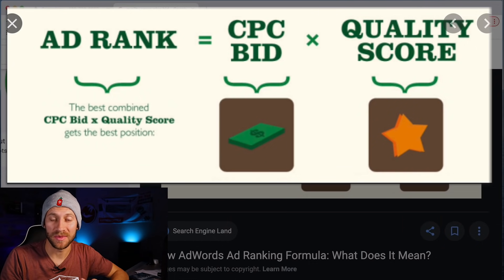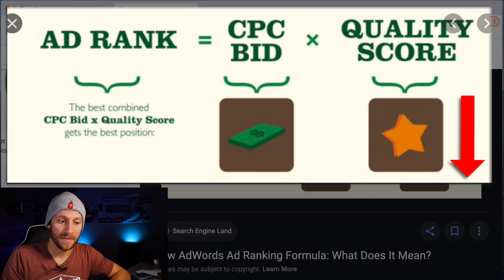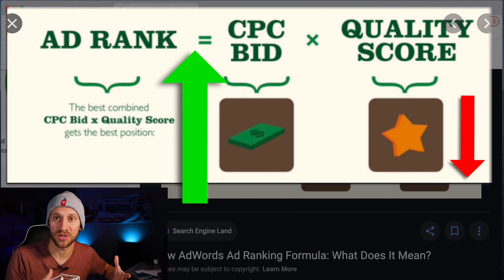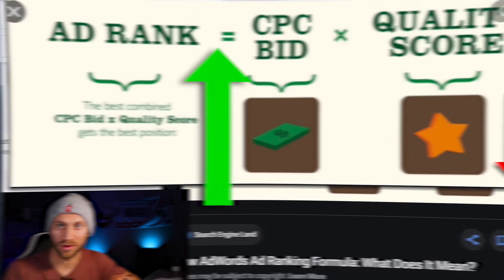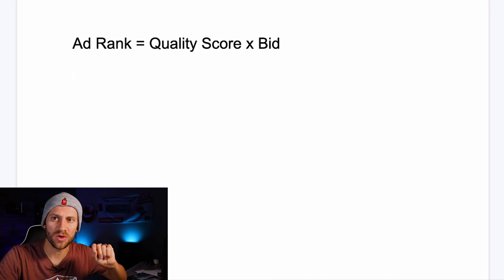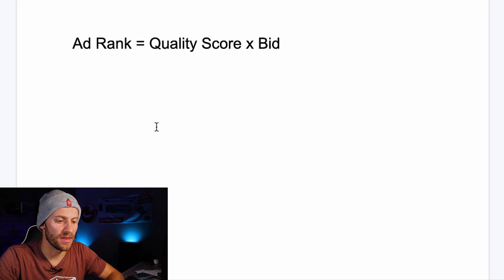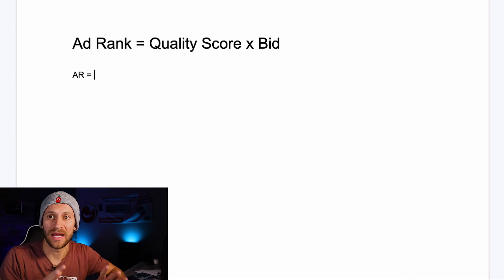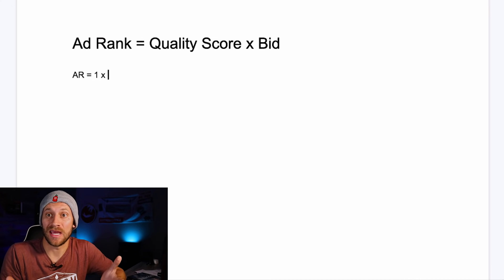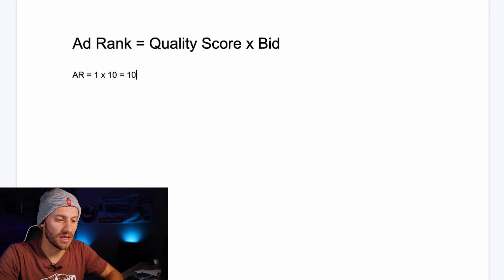If you look at this mathematical algorithm, a really low quality score means if they want to still rank in those top four spots, they're going to have to do a huge bid — like $10 — in order to show up at that top spot. So the ad rank formula is: Ad Rank = Quality Score × Bid. If someone has a quality score of one — a terrible, irrelevant ad — and they bid $10, their ad rank is 1 × 10 = 10.